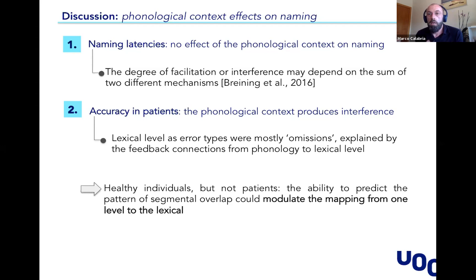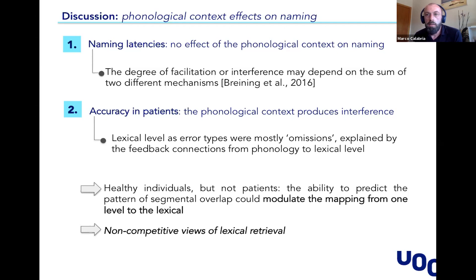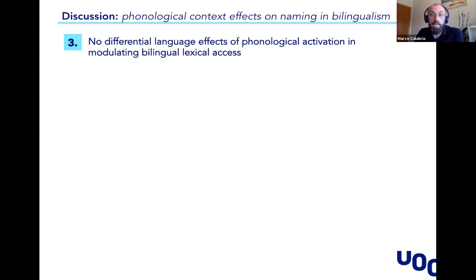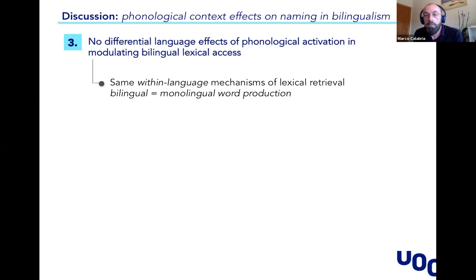We think that a healthy individual can, to some extent, modulate the strength of the connection between phonology and lexical level according to the experimental situation, but this is not the case for patients. If we want to make a general explanation of the phenomenon, at least in the context of phonology, we might think that non-competitive views of lexical retrieval are the best option to explain it, since taking only the competitive view makes it difficult to account for the facilitation effects that previous studies have found with this type of task. For the bilingualism effects, we didn't find any difference between the two languages in both healthy individuals and patients. So we may conclude that bilinguals rely, at least in this condition of phonological modulation, on the same within-language mechanism of lexical retrieval — it seems that, as non-competitive views say, bilingual and monolingual production work similarly.